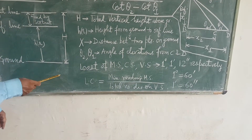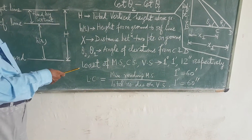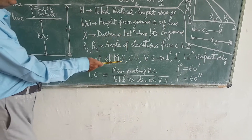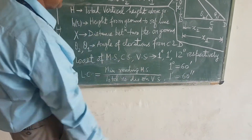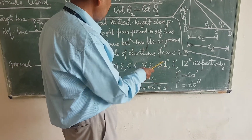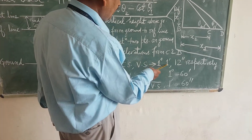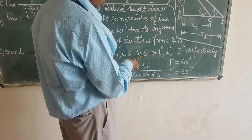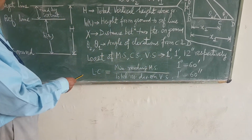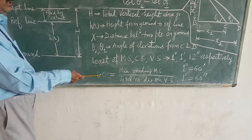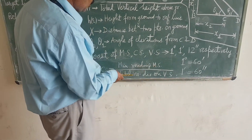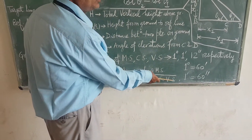The least count: there are 3 scales in the sextant — main scale, circular scale, and vernier scale. The least count of the main scale is 1 degree, the circular scale is 1 minute, and the vernier scale is 12 seconds respectively. The formula for least count is: minimum reading of the main scale divided by the total number of divisions on the vernier scale.